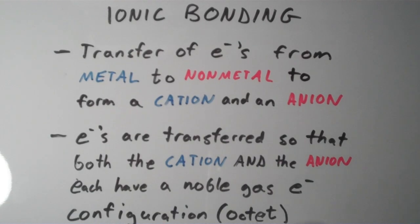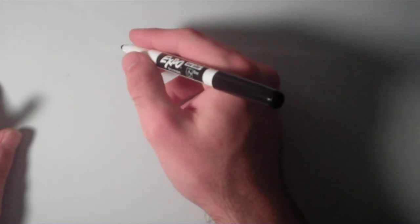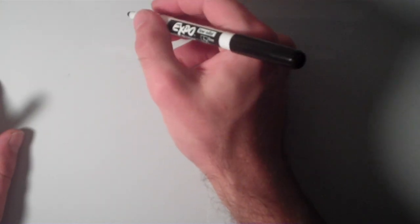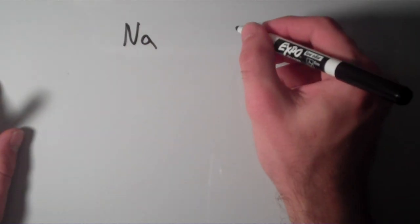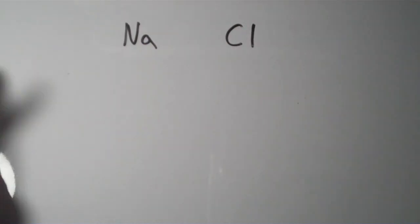So let's just go through a couple of examples and see if we can't predict the chemical formulas of some ionic compounds just by using Lewis theory. Suppose I want to know the formula of an ionic compound between sodium and chlorine. How could I use Lewis theory to figure out the chemical formula for this ionic compound?